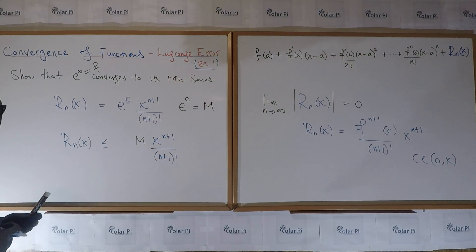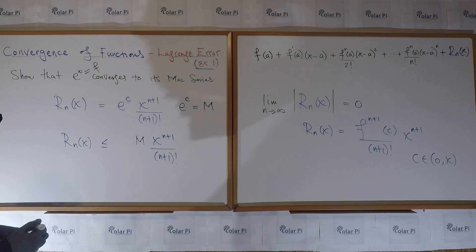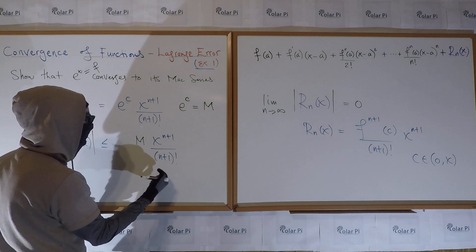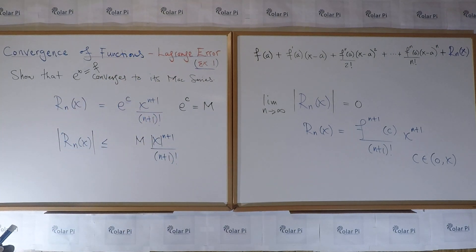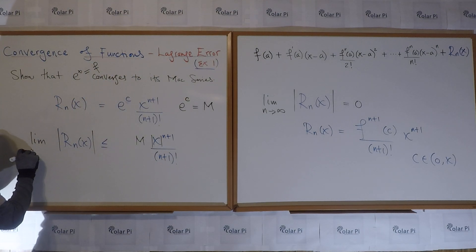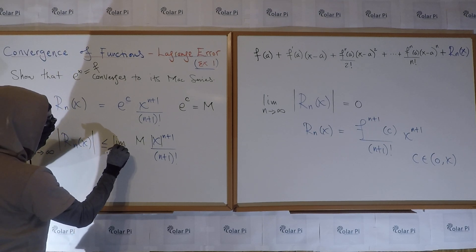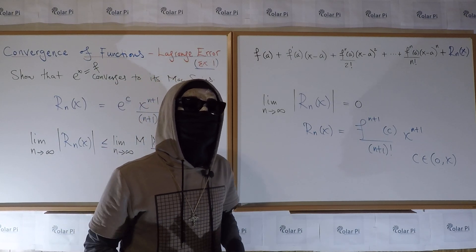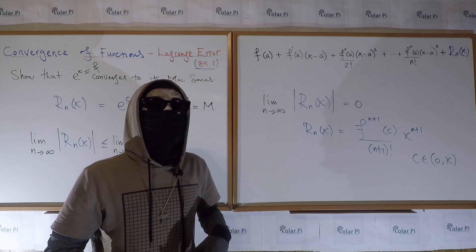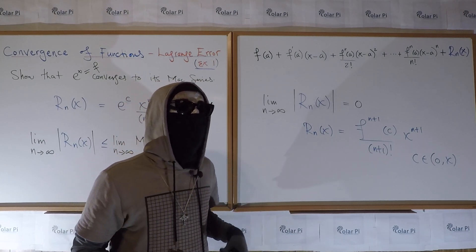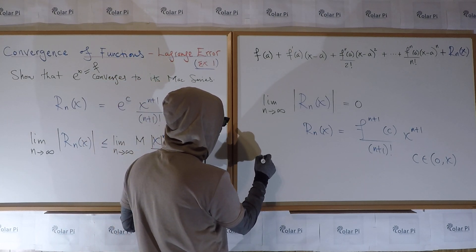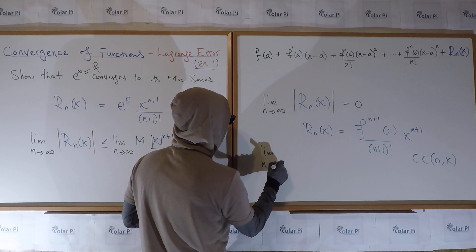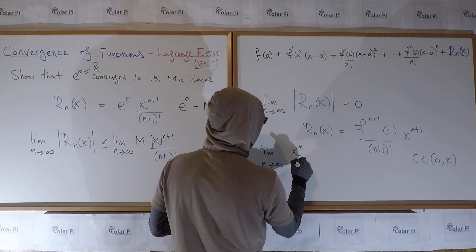We need the absolute value of R_n, and by absolute value rules this bound is unaffected. We then take the limit as n goes to infinity. Using the squeeze theorem — which I'll prove in upcoming calculus 1 videos on the squeeze theorem — there is a famous limit we can apply here.